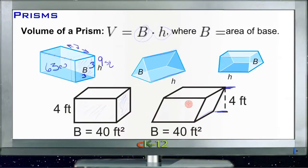If the base of this figure is 40 feet squared and the bottom that we can't see is also 40 feet squared, if it is 4 feet tall from here to here, then it's going to be 40 times 4 or 160 cubic units.